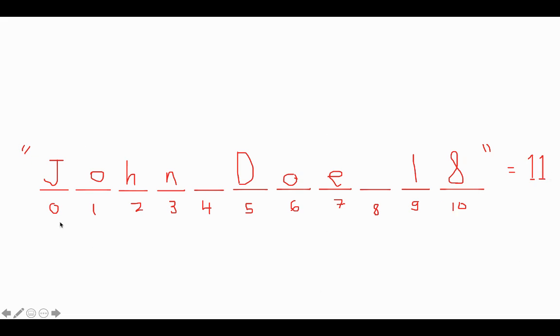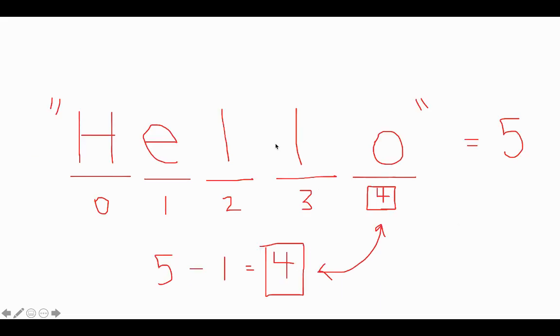Again, because we start at zero, there are 11 characters in this string which makes it a size 11. So notice that the last index of every string is one less than the size. If we take the size which is 11, we subtract 1 from it, we get 10 which is the last index. The same for this string hello, we have this string has a size of 5 because there's 5 characters in it.